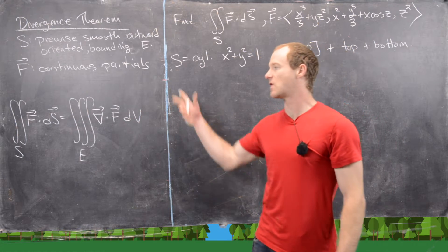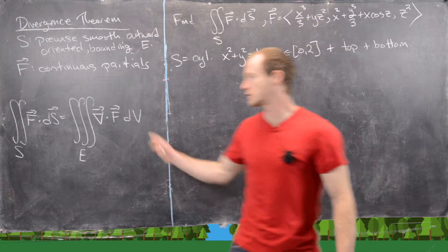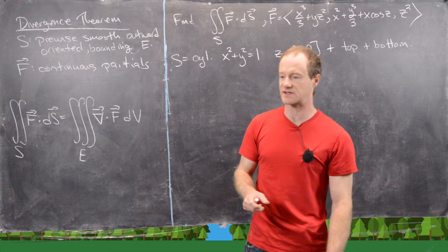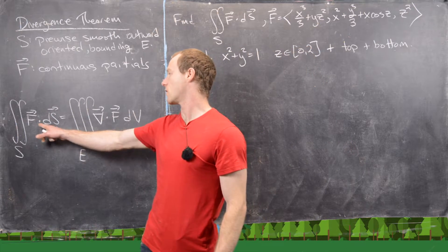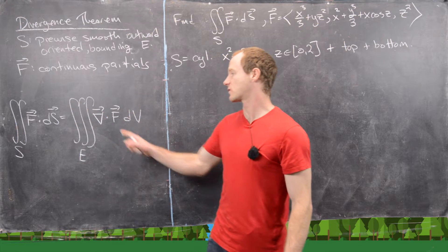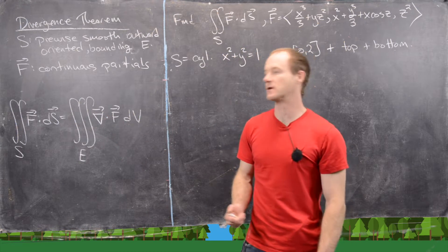then we have this following equality of integrals. So we've got the surface integral on the left-hand side and then this triple integral over a solid region on the right-hand side. So the surface integral over the vector field F is the same thing as the triple integral of the divergence of the vector field.